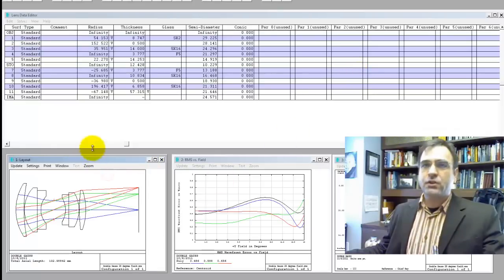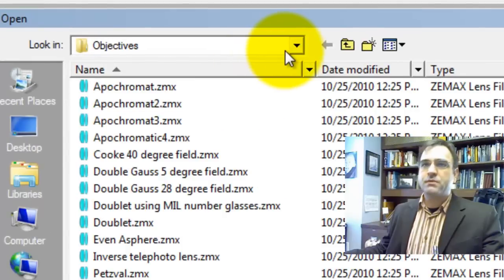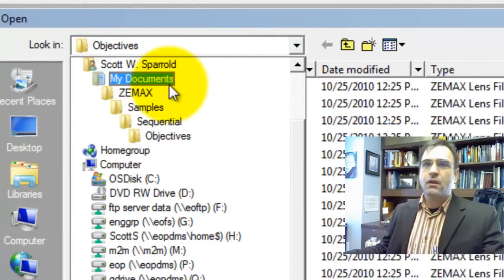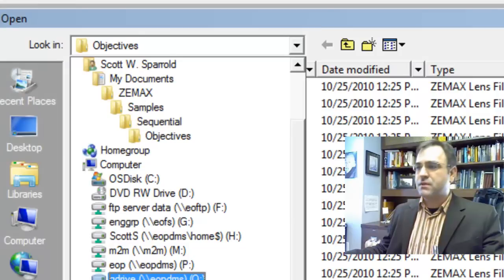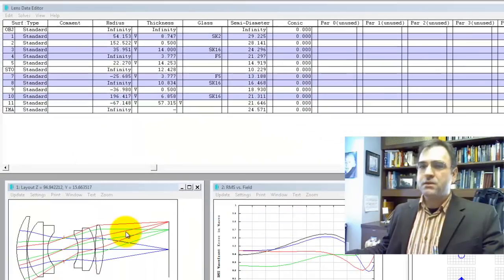This is a cook triplet and this comes from my documents, ZEMAX samples, sequential objectives. It's just this 28 degree double gauss. So what do we have here?